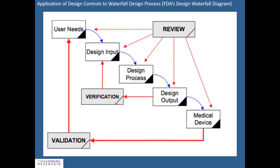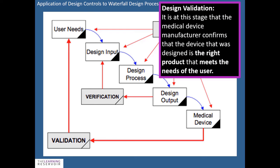Validation and verification are also shown. Design validation is the stage where the manufacturer confirms the device designed is the right product that meets the needs of the user — for example, validating that the hoist can fit into a small space in a house. Verification checks the design output against the design input specifications — for instance, confirming the length of the base of the hoist meets the specified dimension requirement.